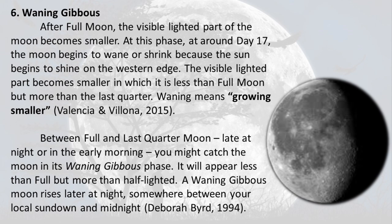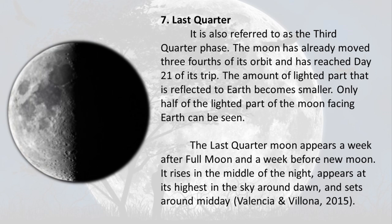Phase 6 — Waning Gibbous: After the full moon, the visible lighted part of the moon becomes smaller. At around day 17, the moon begins to wane or shrink because the Sun begins to shine on the western edge. The visible lighted part is less than full moon but more than the last quarter. Waning means growing smaller. Between full and last quarter moon, late at night or in the early morning, you might catch the moon in its waning gibbous phase — appearing less than full but more than half lighted.